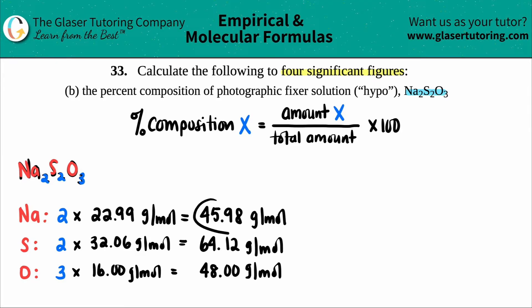So now we have the individual total masses or molar masses of the sodium, the sulfur, and the oxygen. Let's just find out what the total amount would be of the whole compound. We add all those up. So 48 plus 64.12 plus 45.98. And we get a total molar mass of 158.1 grams per mole. And that's the total.